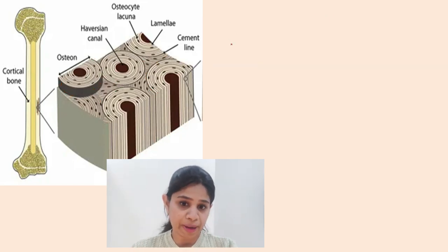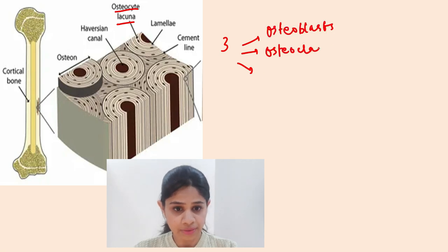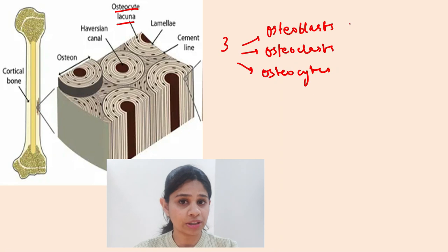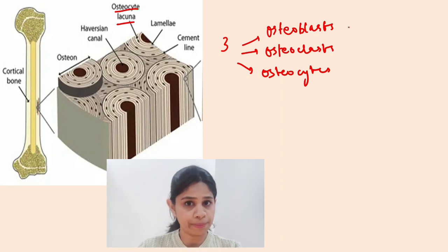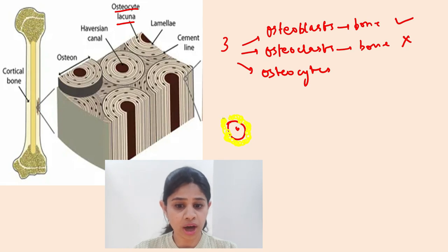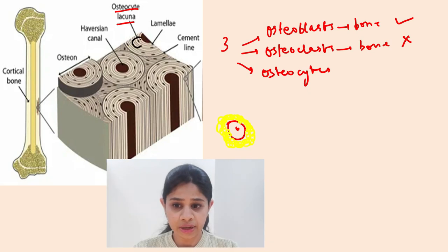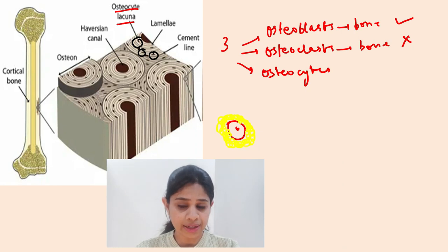Another important aspect of the cortical bone is the presence of osteocyte lacunae. There are three types of cells important in bone: osteoblasts, osteoclasts, and osteocytes. Osteoblasts are bone-forming cells and osteoclasts are bone-resorbing cells. Once an osteoblast forms bone around itself, it gets lodged in a cavity termed a lacuna. The communication between two lacunae is termed the canaliculi.